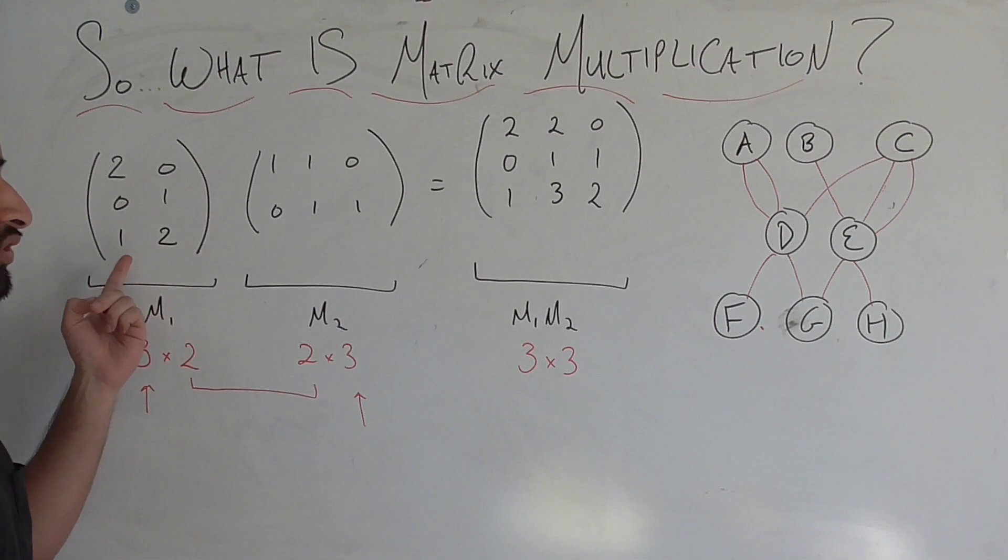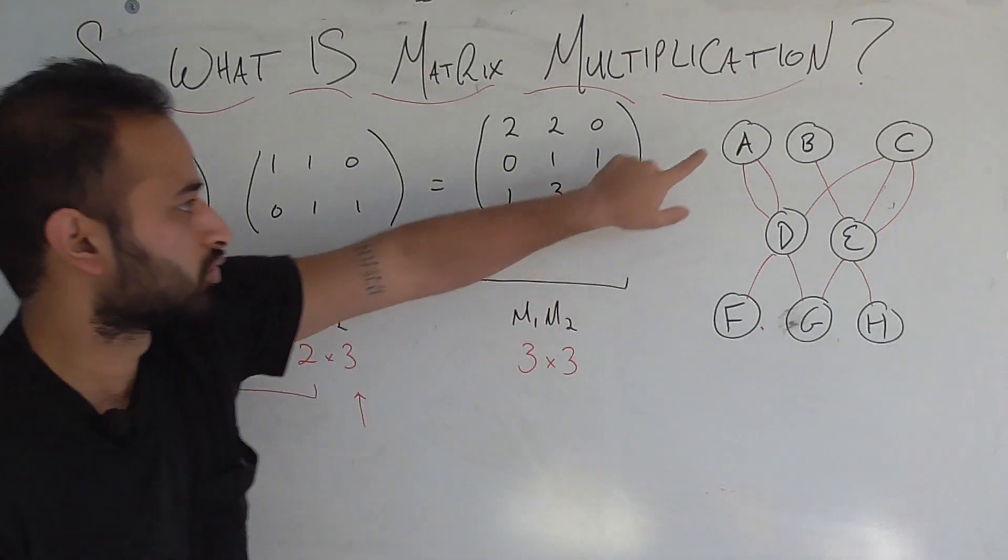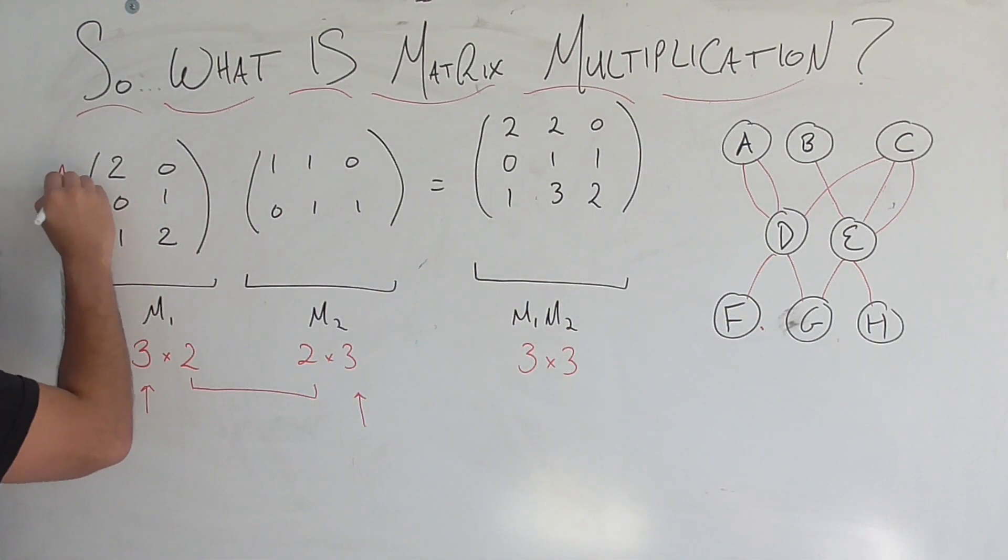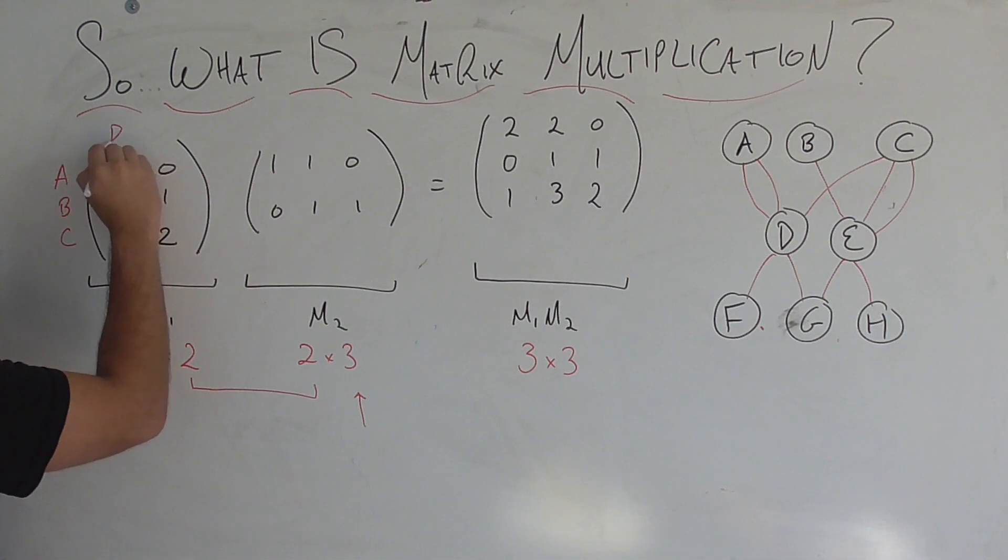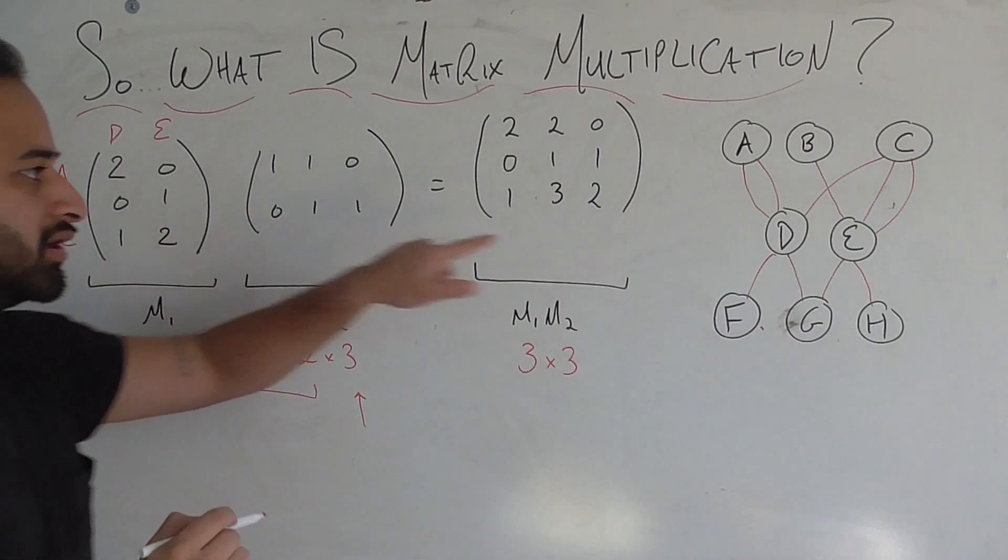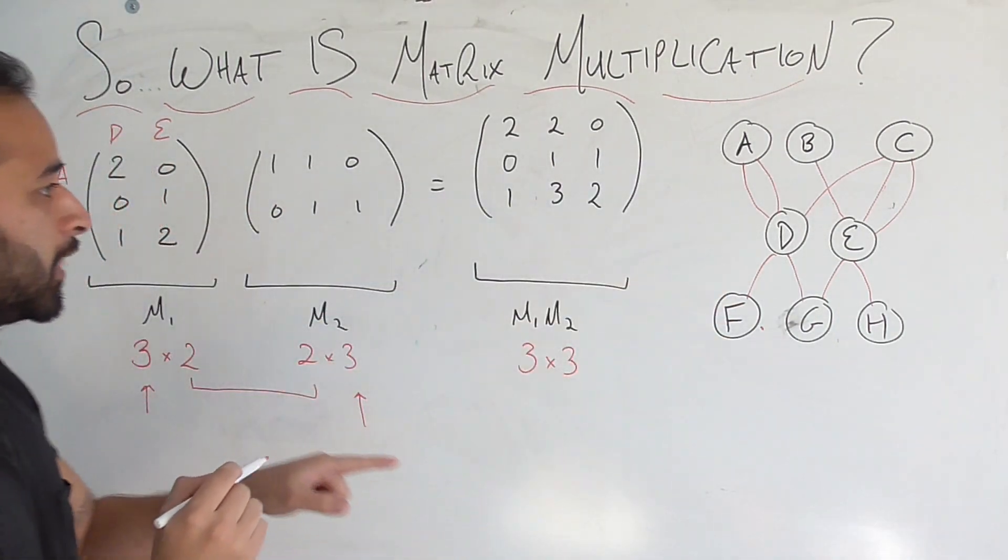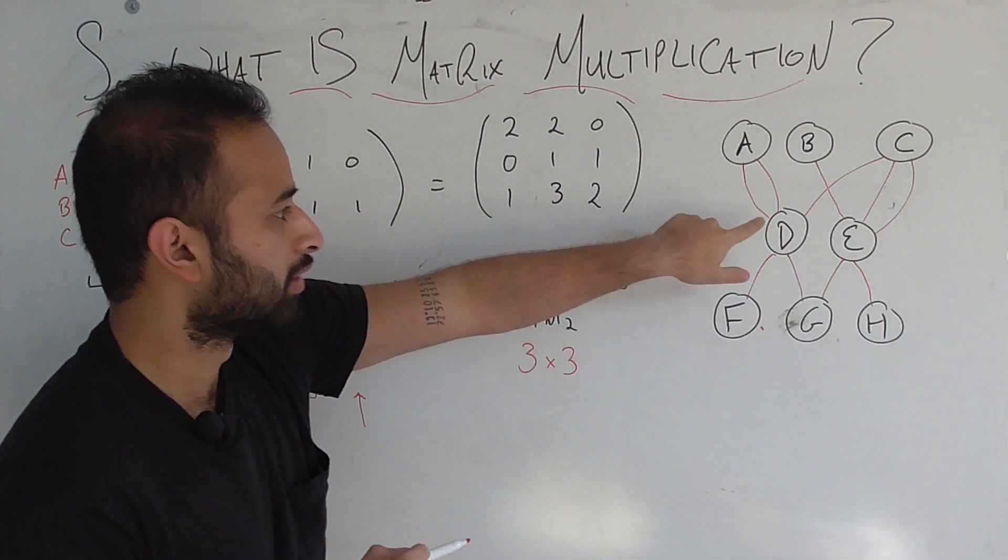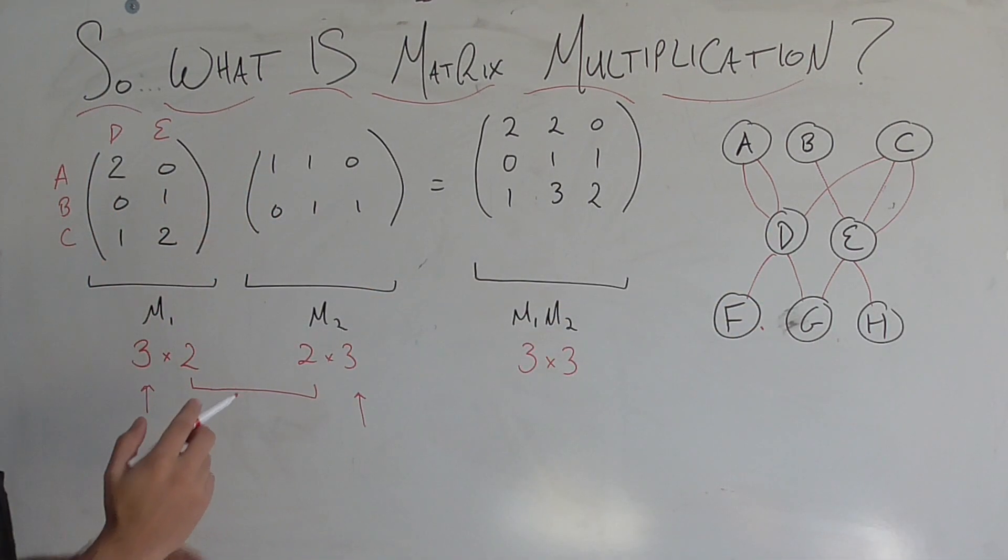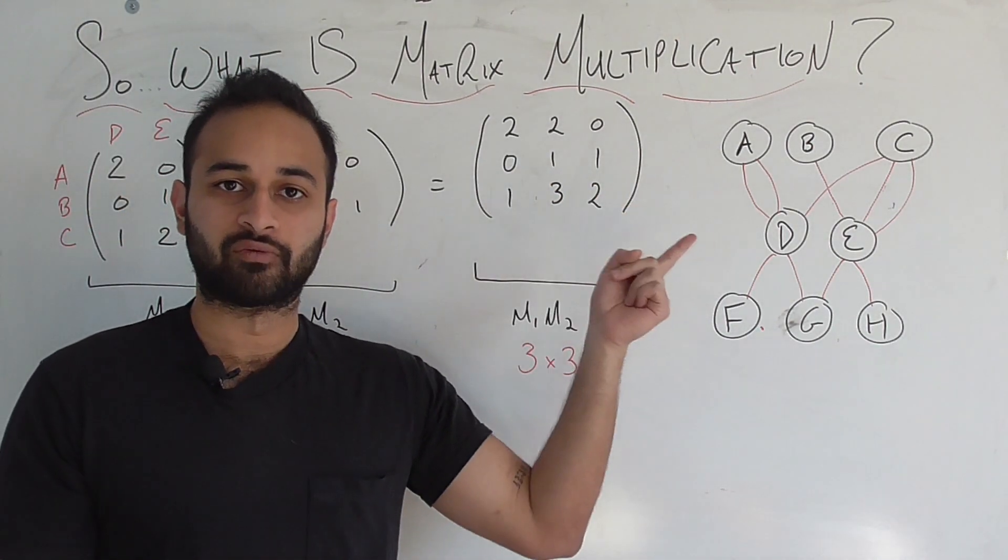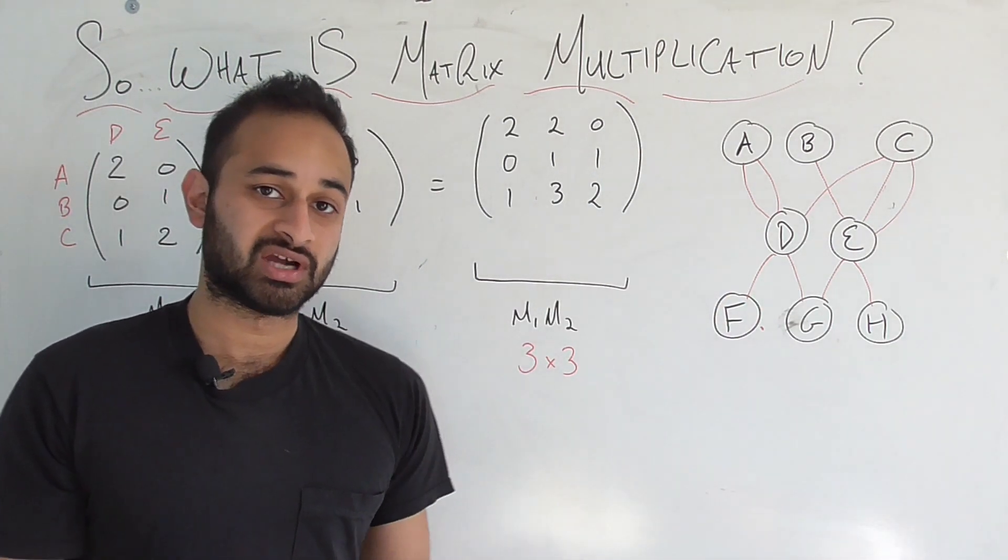This first matrix here gives you all of the paths to get from the source cities to the layover cities. And I'm going to go ahead and put A, B, C, and then D, E. For example, A to D, there's two routes, right? We decided that there's two routes there. For example, from B to D, there's no routes to get there. So we see this first matrix fully encodes the number of ways to get from any of your source cities to any of your layover cities.